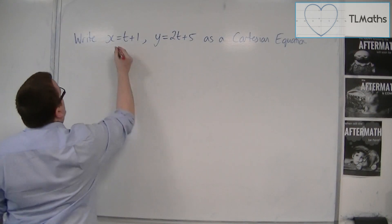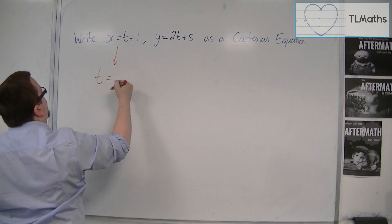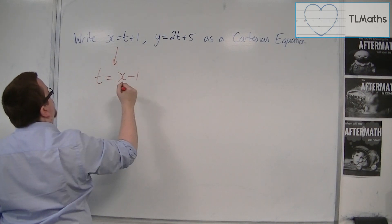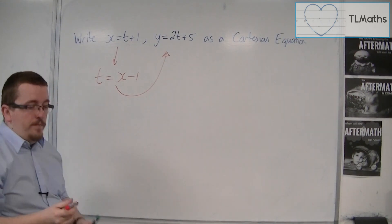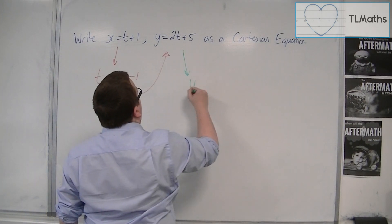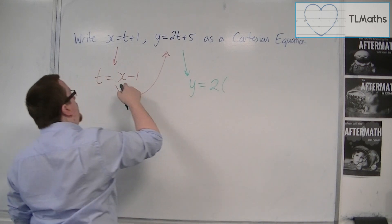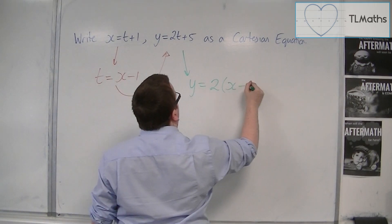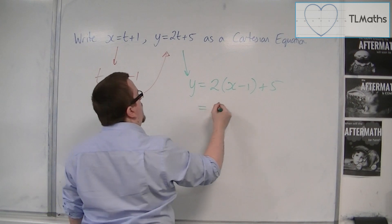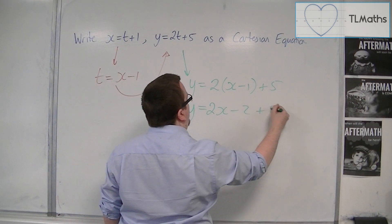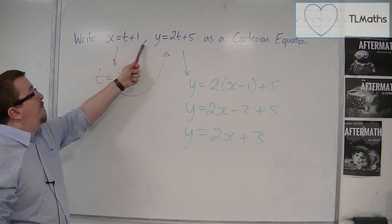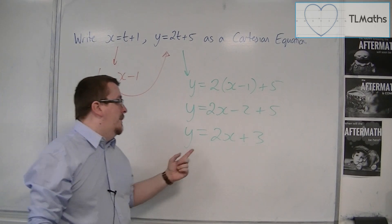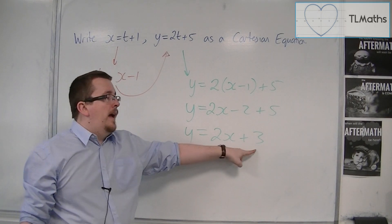The first way would be to start with x = t + 1 and rearrange it to get t = x − 1. Then substitute that back into the second equation to get y = 2(x − 1) + 5, which gives y = 2x − 2 + 5, so y = 2x + 3. This pair of parametric equations defines a straight line with gradient 2 and y-intercept 3.